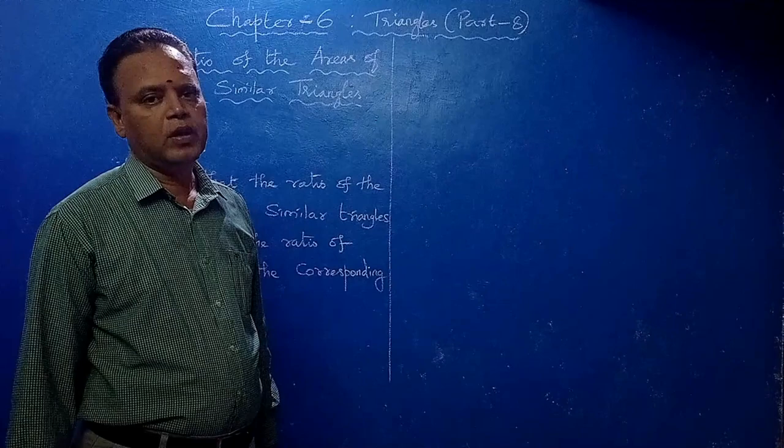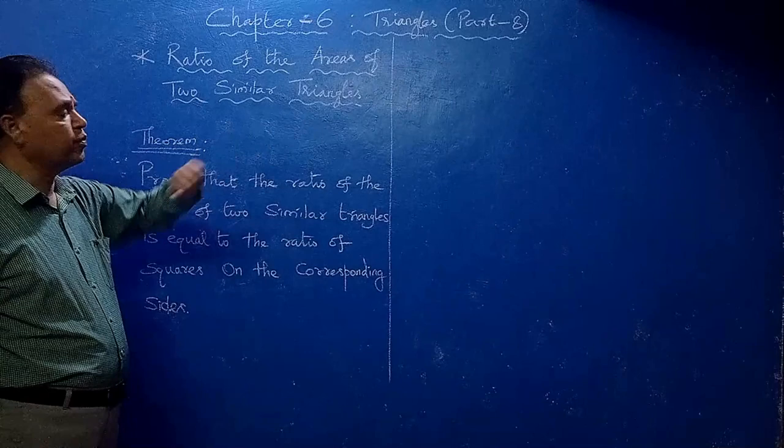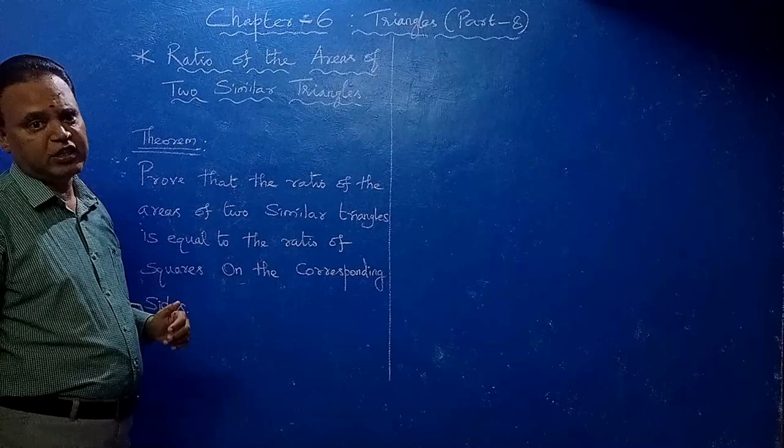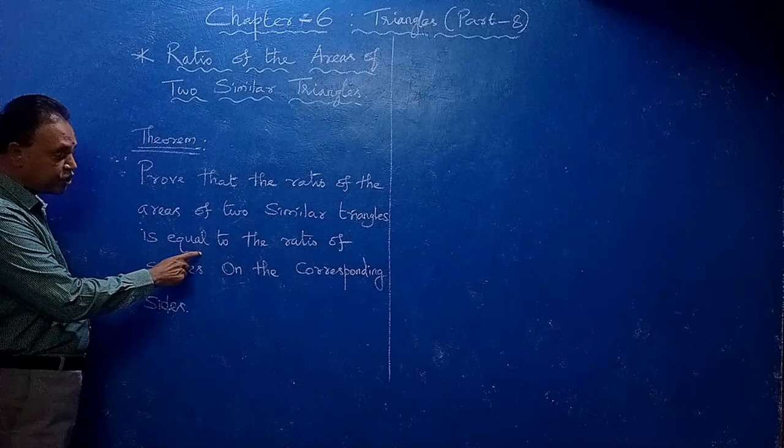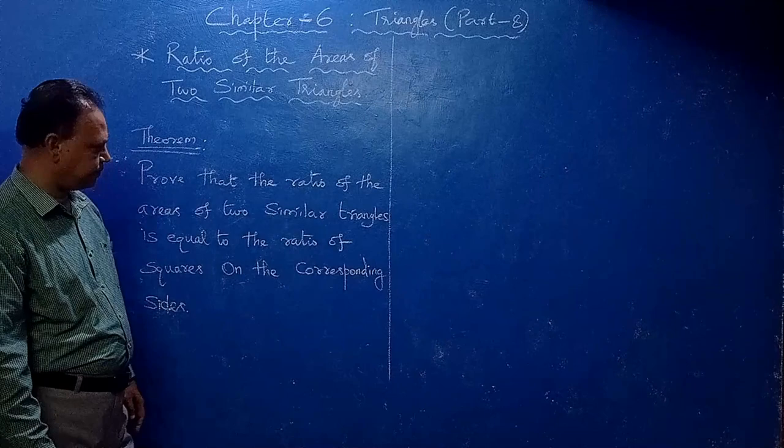Chapter 6 Triangles Part 8. In this part we are going to see the ratio of the areas of two similar triangles. The theorem states: prove that the ratio of the areas of two similar triangles is equal to the ratio of the squares on the corresponding sides.